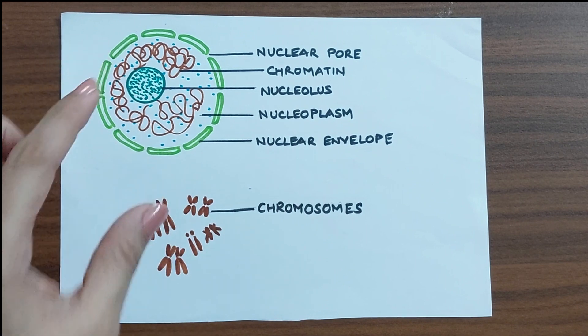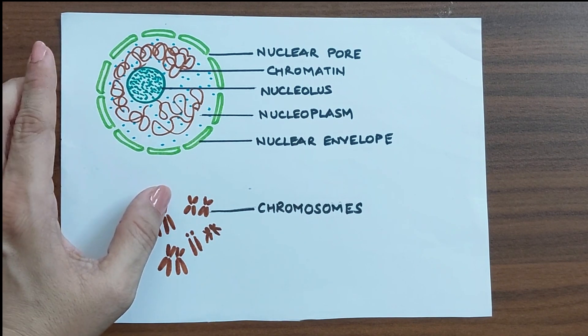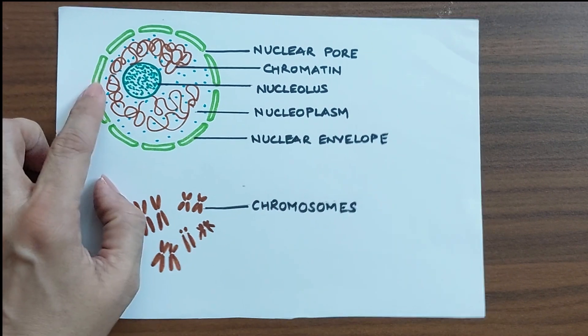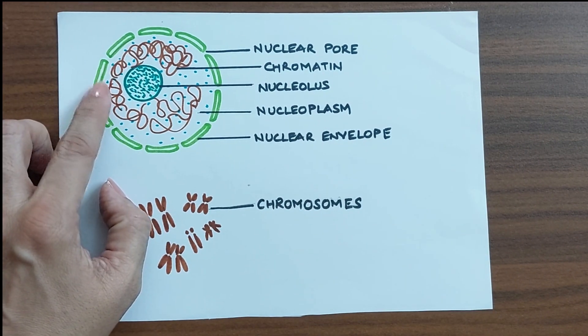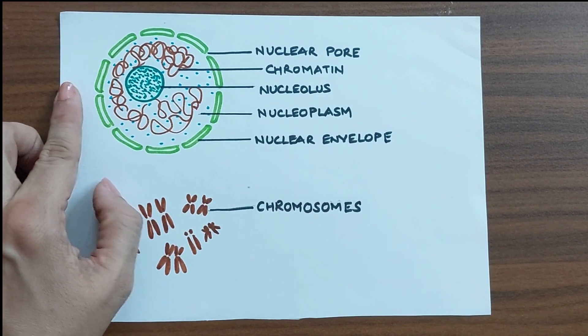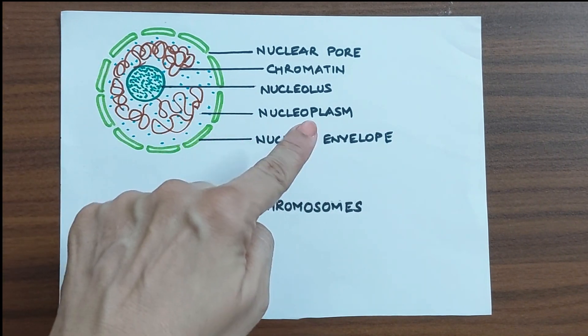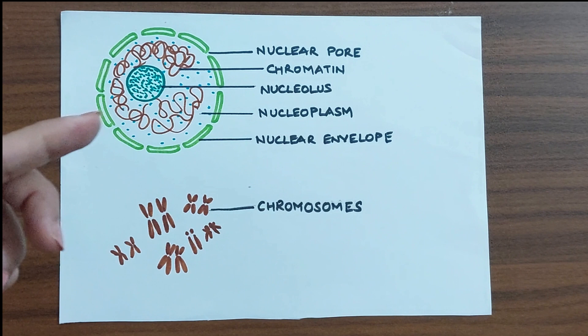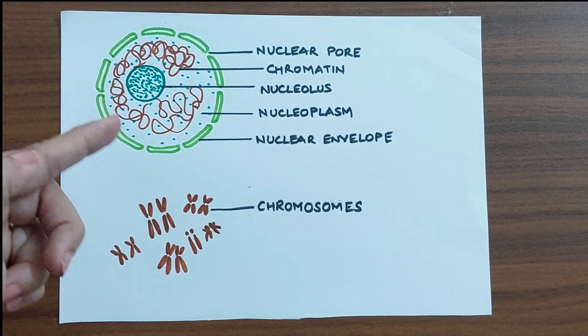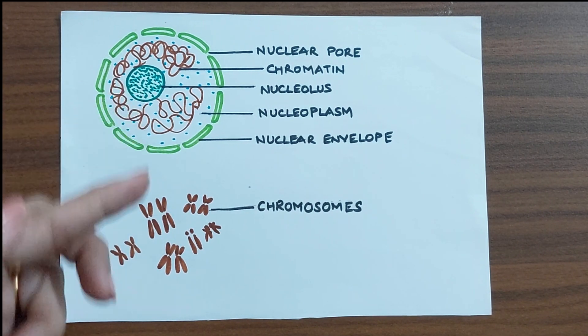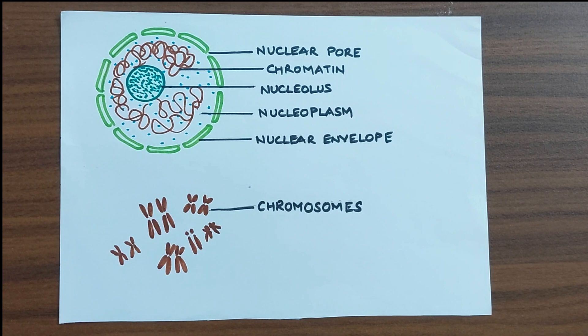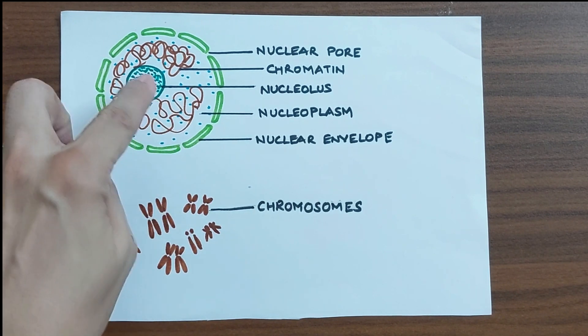Now, let's start with the nucleus. Nucleus as we saw is centrally located. It is an oval or a spherical body. It is protected by double-layered membrane. And inside the nucleus, there is again a fluid structure which is known as the nucleoplasm. And the nuclear membrane, it separates the nucleoplasm from the cytoplasm.